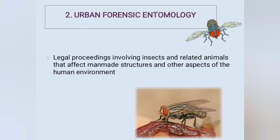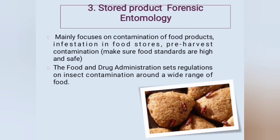Urban forensic entomology involves legal proceedings relating to insects and related animals that affect man-made structures and other aspects of the human environment. Stored product forensic entomology mainly focuses on contamination of food products, infestation in food stores, and pre-harvest contaminations, ensuring food standards are high and safe. The Food and Drug Administration sets regulations on insect contamination across a wide range of food.